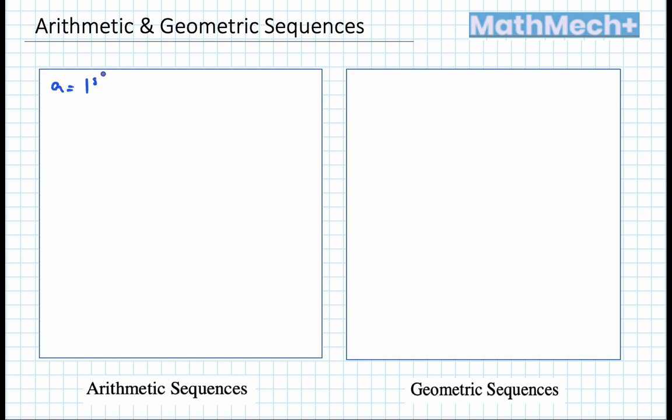A is your first term. D is the difference between, for instance, your first and second term. For instance, like u2 minus u1 is the difference between the second and the first term.